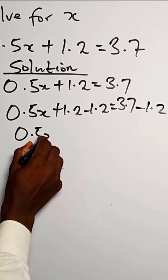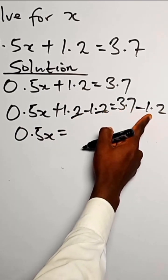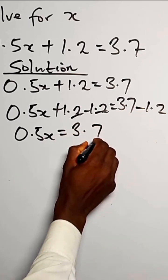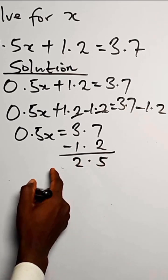So we have 0.5x. This result equals 3.7 minus 1.2, which equals 2.5.